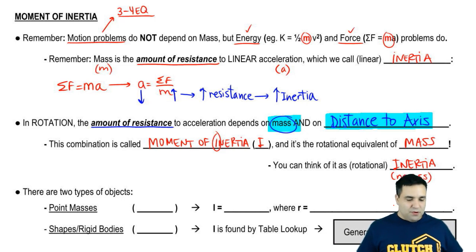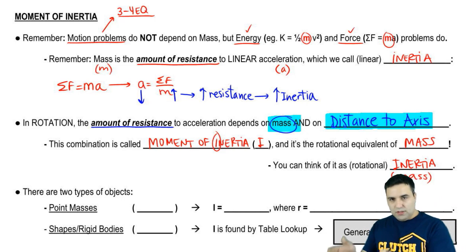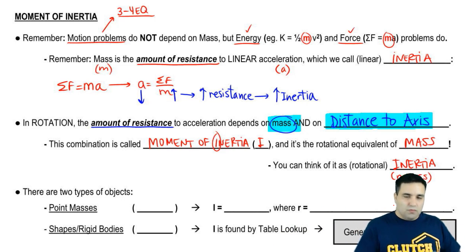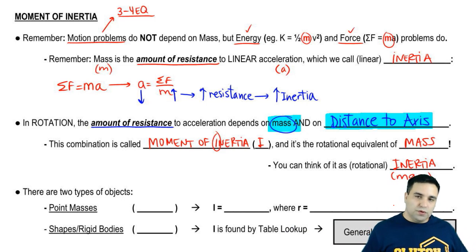So depending on the kind of problem you have, if you have motion, linear motion, or any kind of linear problem, you use mass. If you have any kind of rotational problem, you're going to use rotational mass, which is called moment of inertia.